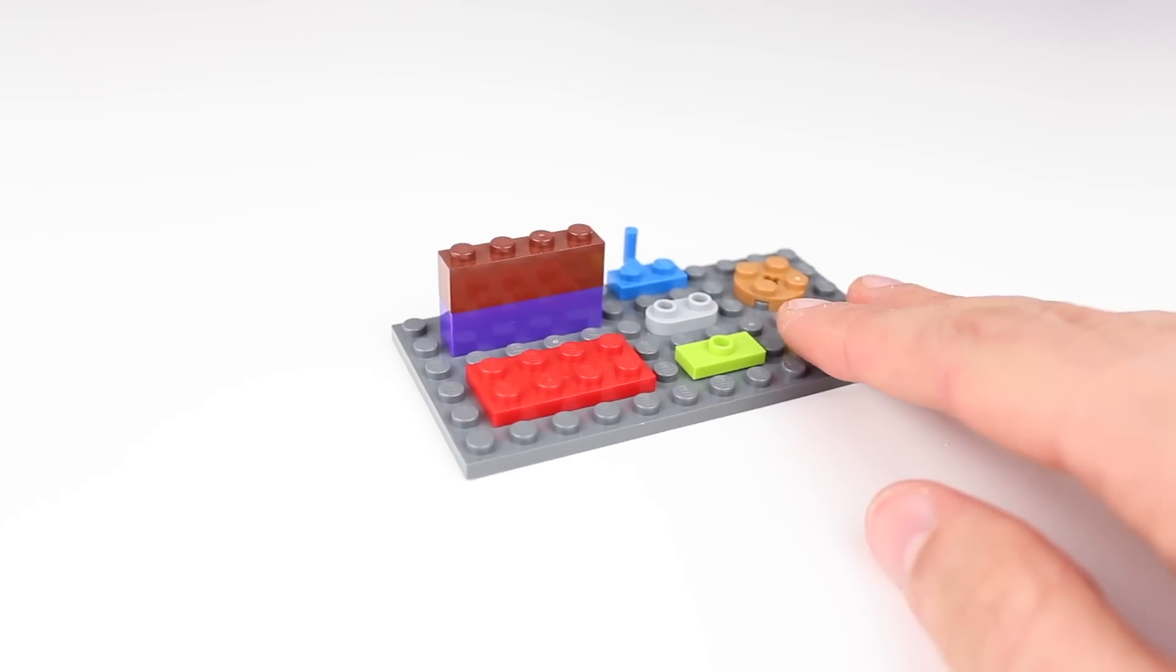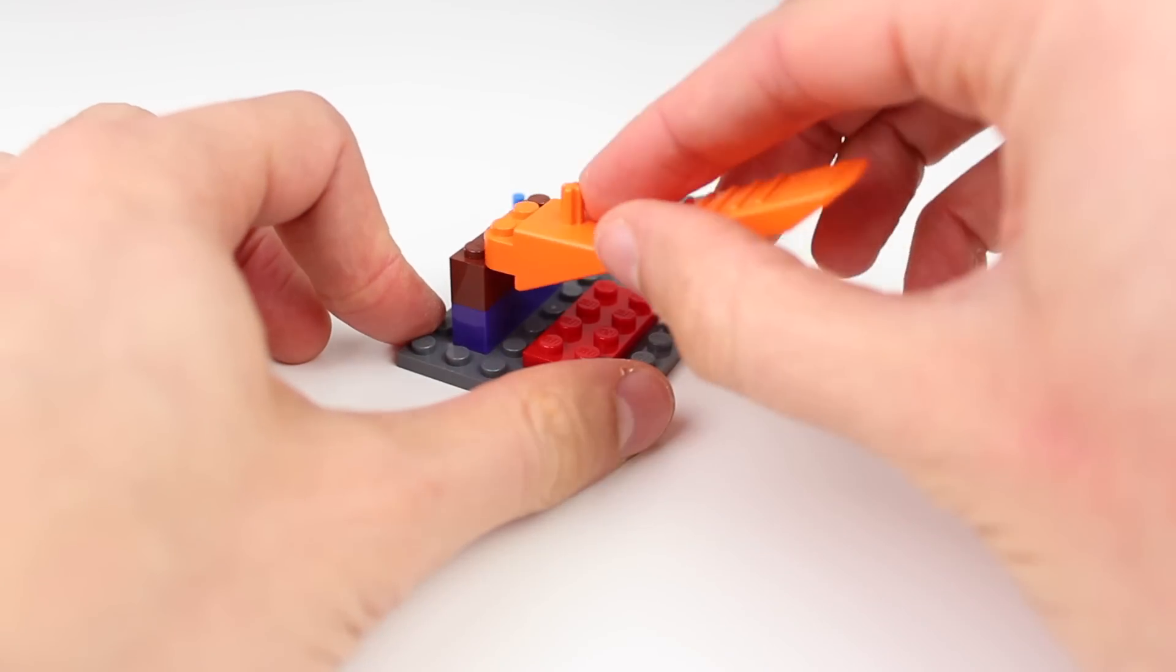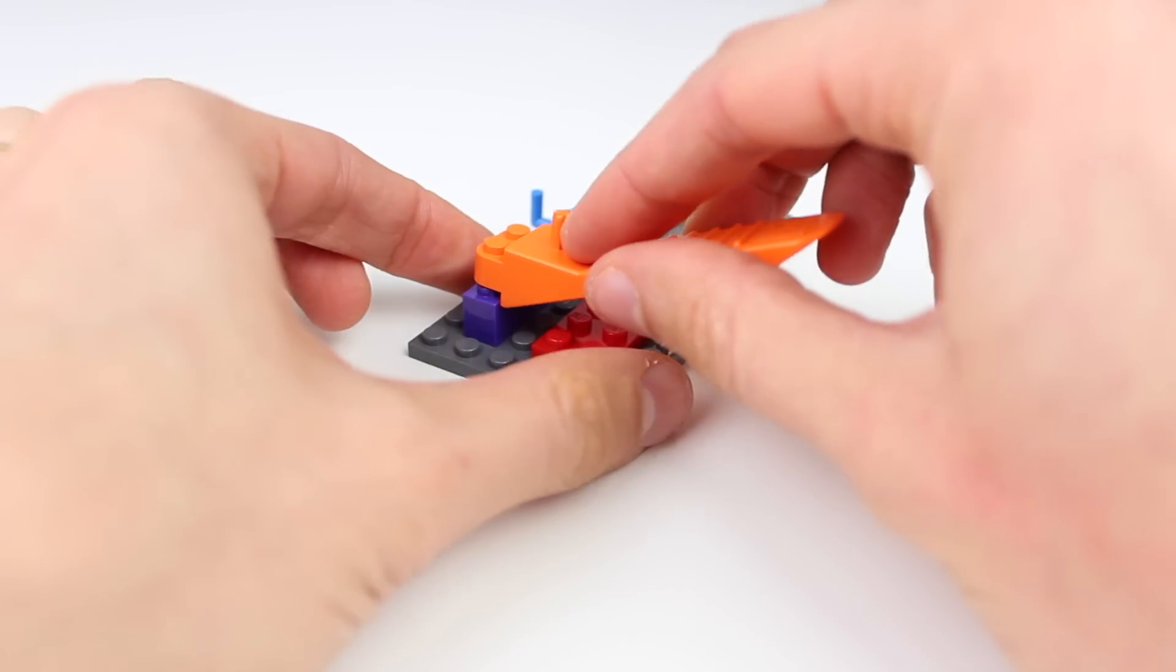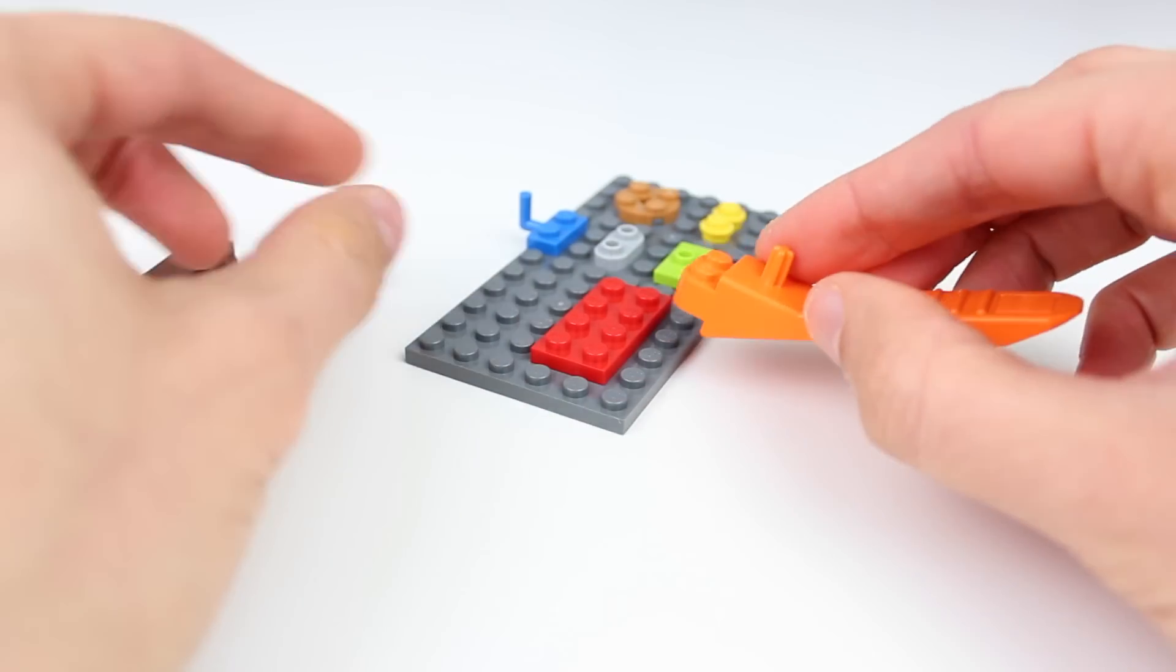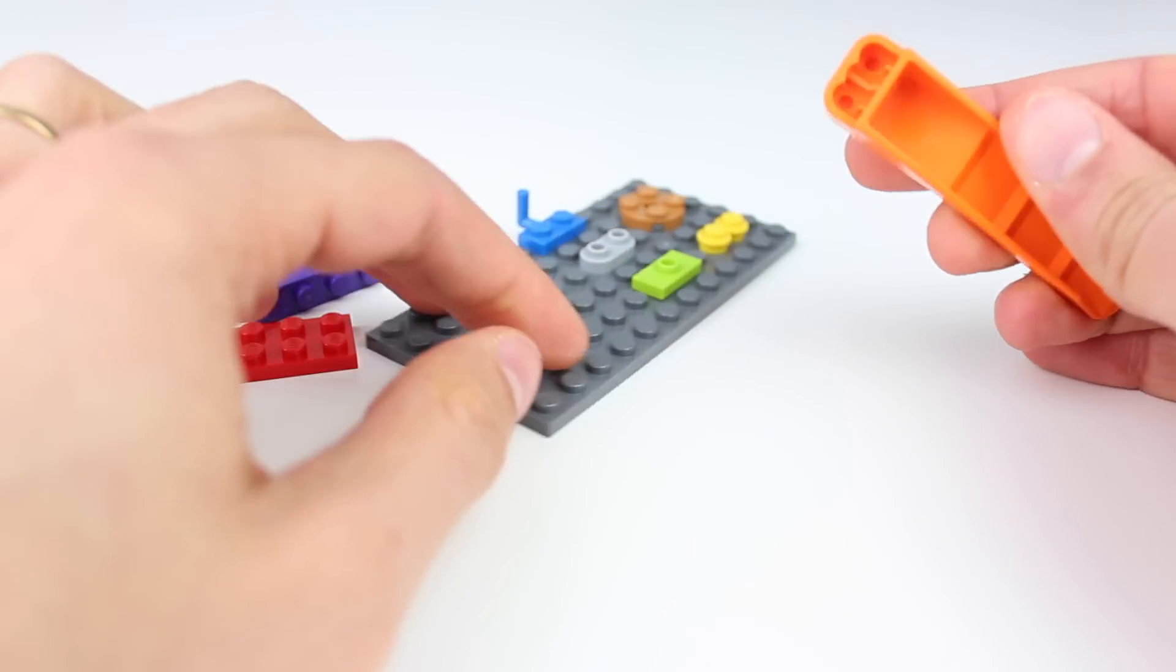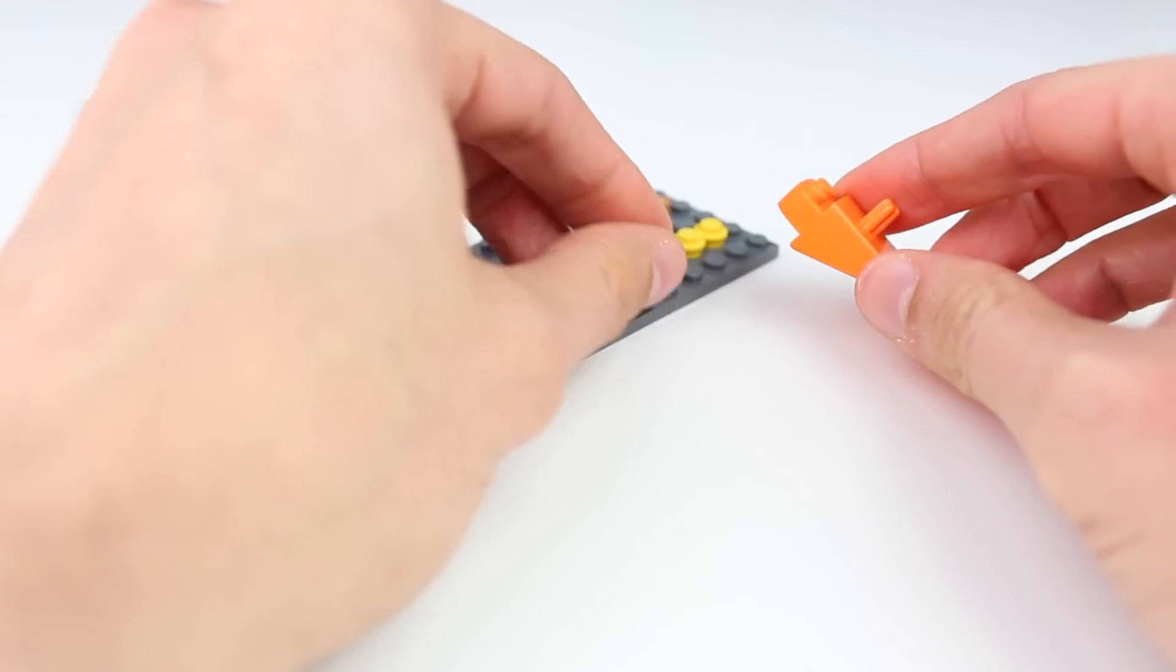This here is the most common use of the brick separator. If you attach studs here on this part and then you press down, there you go. They're really easy to take apart and you can do this with pretty much every LEGO element that has studs on top. You can also use this middle hole here and connect it to a jumper plate to take it off.